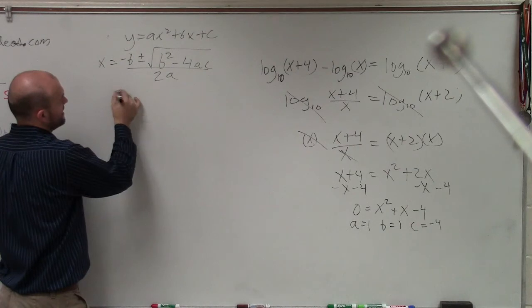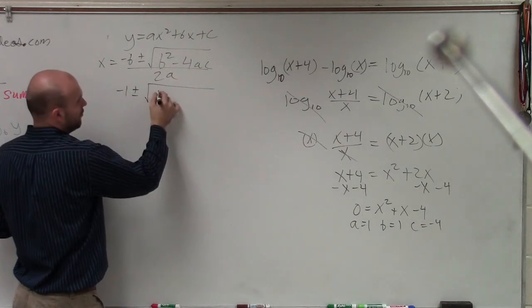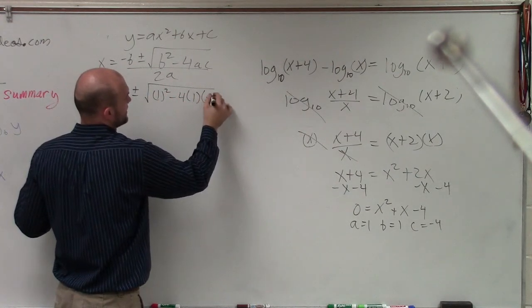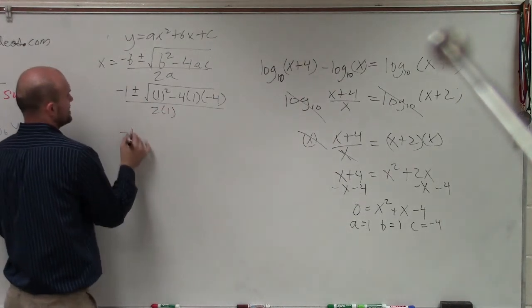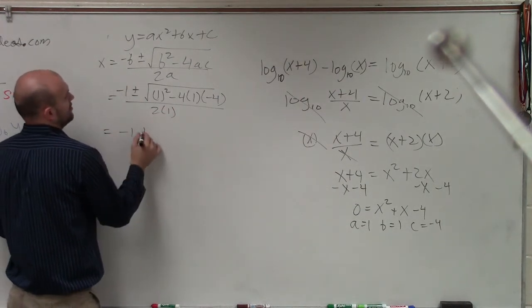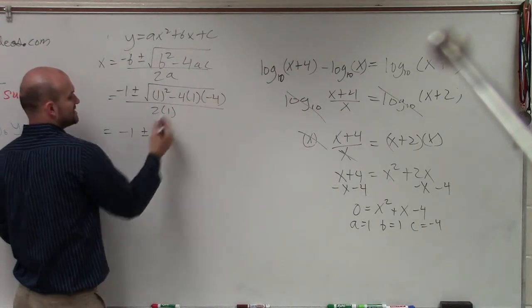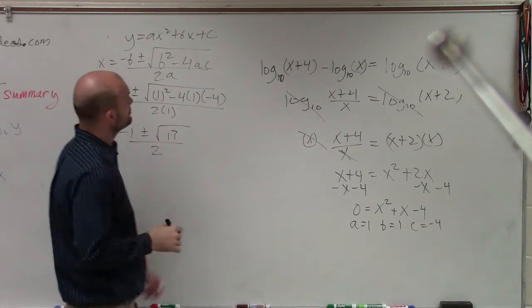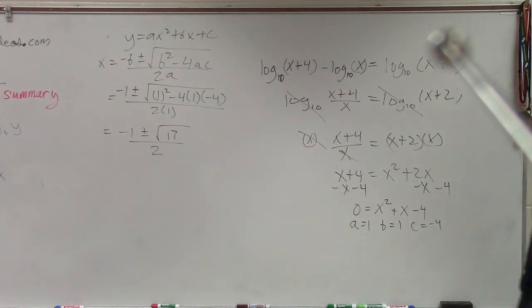So now we plug them in. So I'm going to have negative 1 plus or minus the square root of 1 squared minus 4 times a times c divided by 2 times 1. So it's negative 1 plus or minus 1 squared is 1. That's going to be plus 16. So it's going to be the square root of 17 divided by 2.